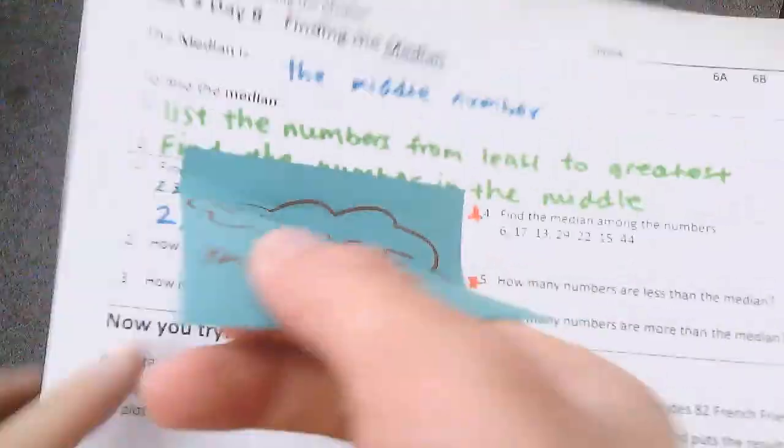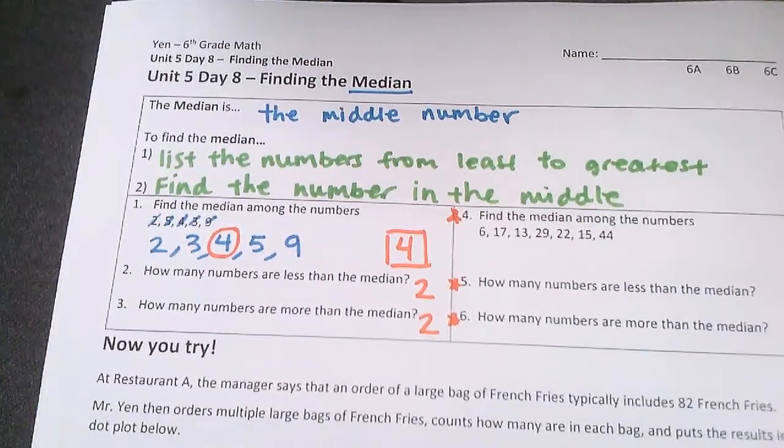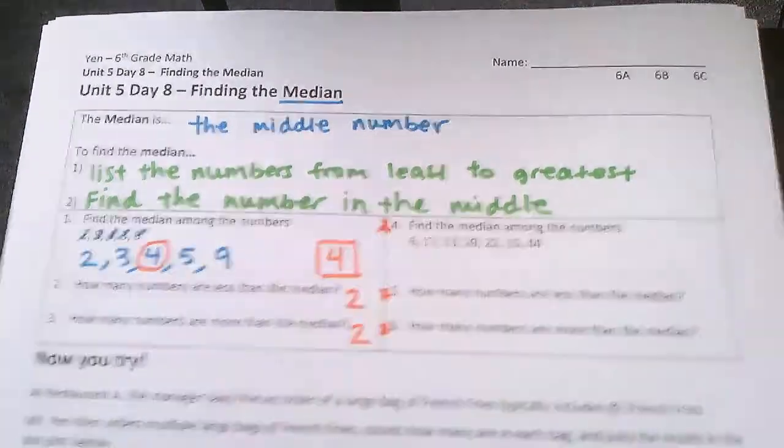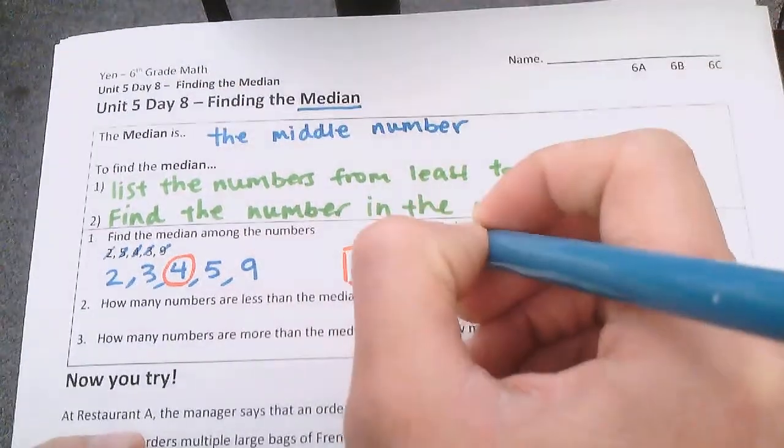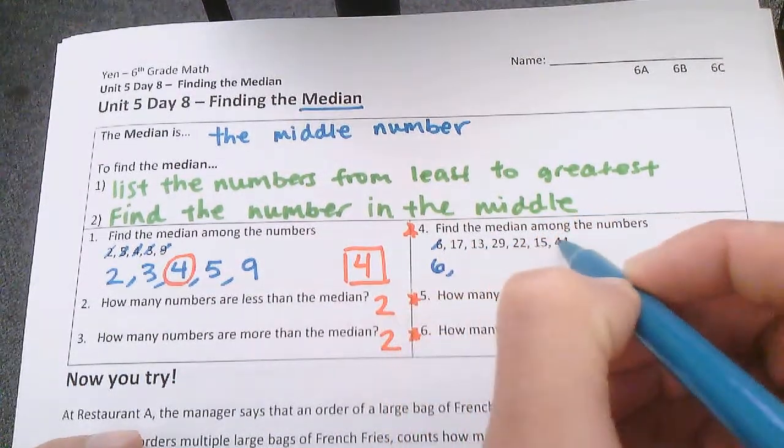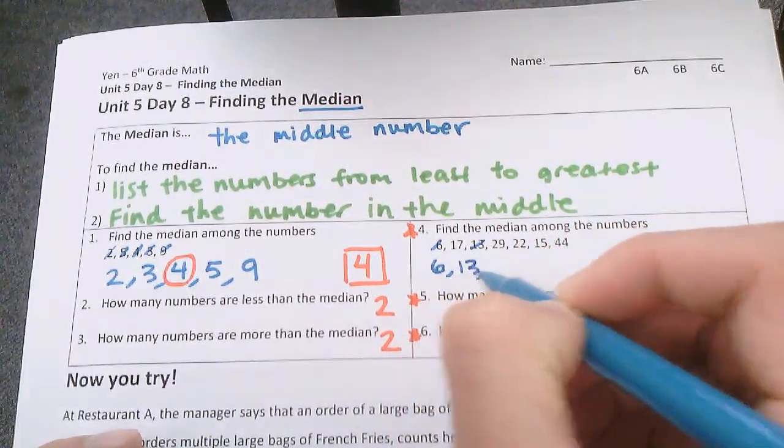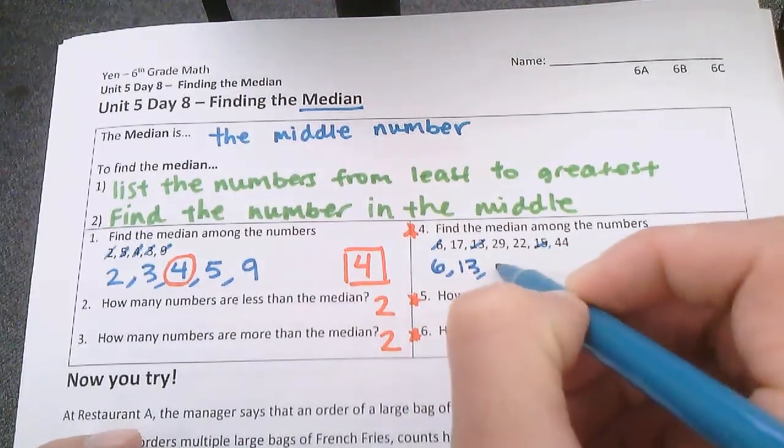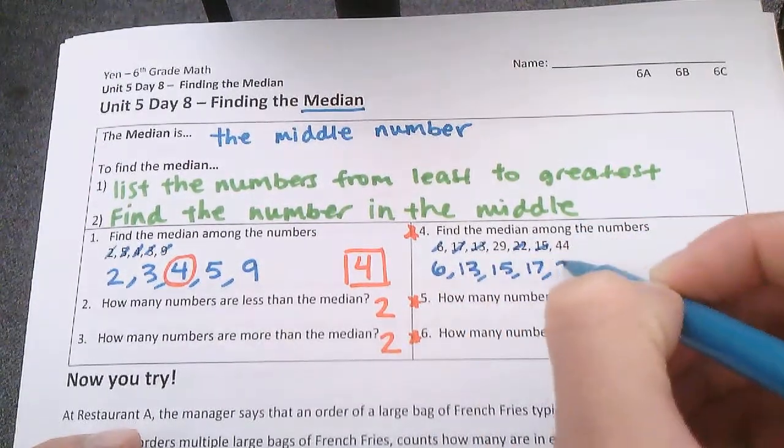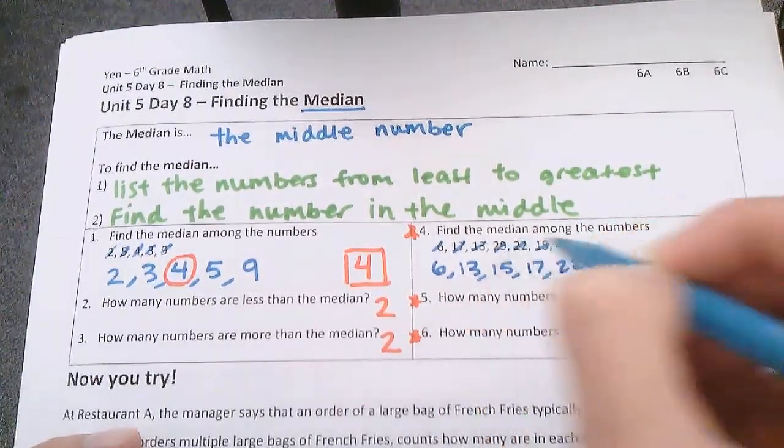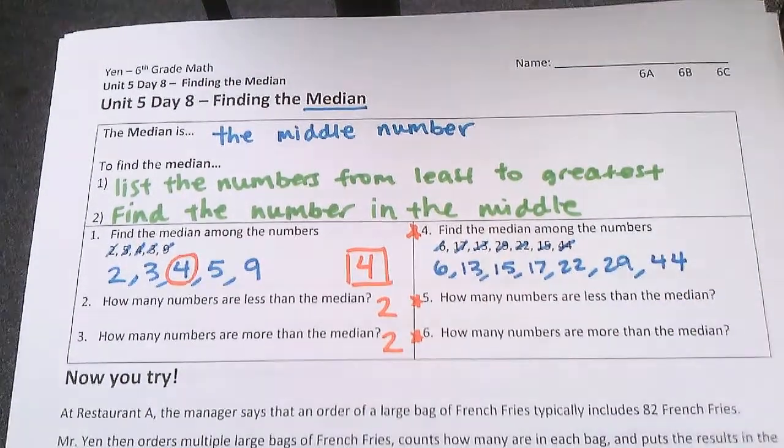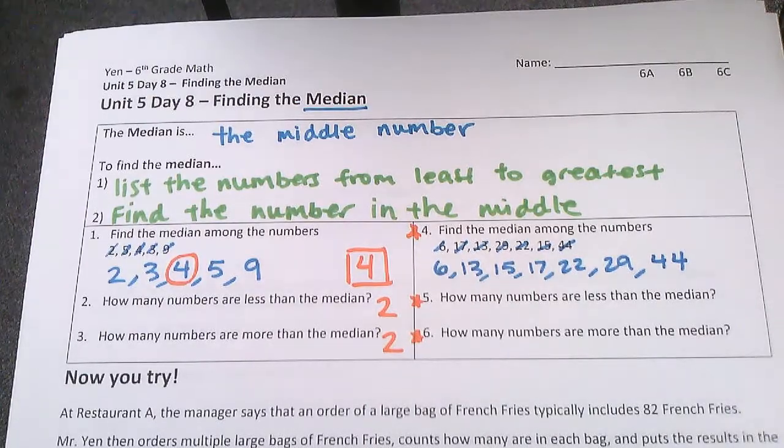Now you are resuming the video to check your work. Here are our numbers. The first step is to list them from least to greatest. So let's do that. The lowest is 6, and then after 6 would be 13, and then 15, and then 17, and then 22, and then 29, and then 44.